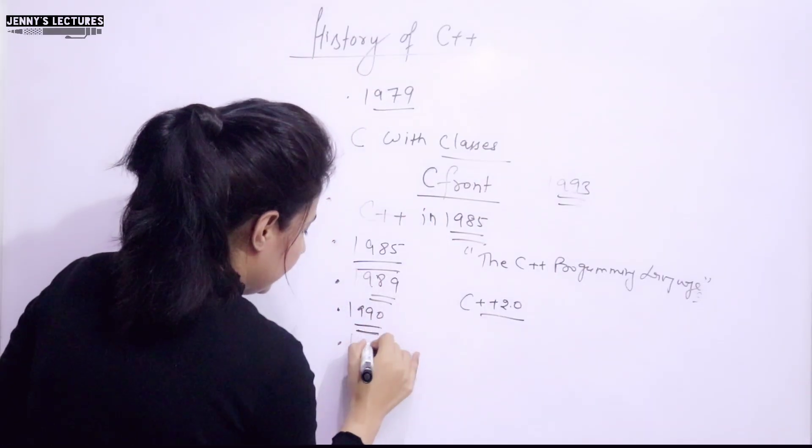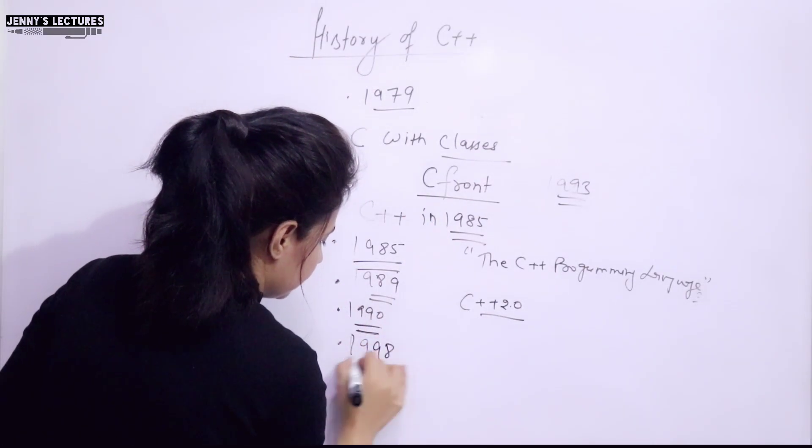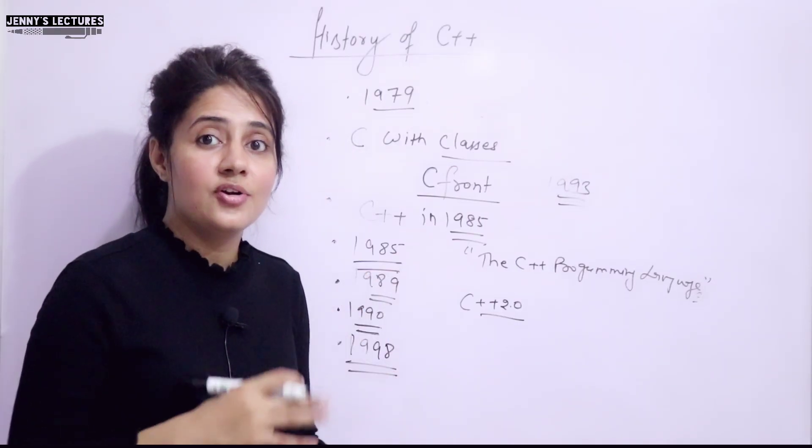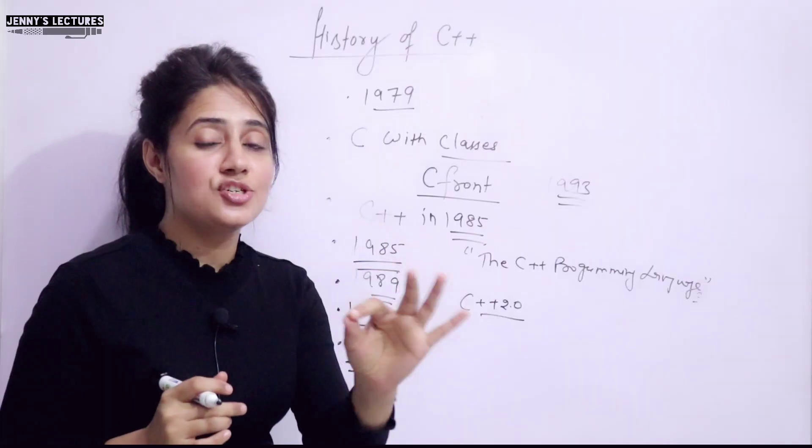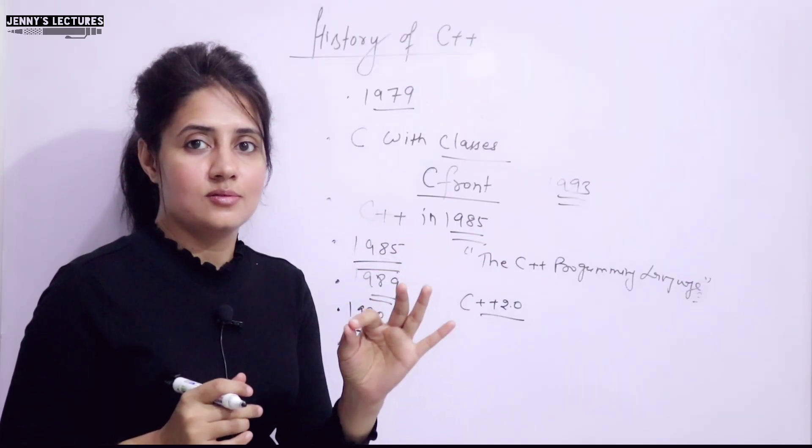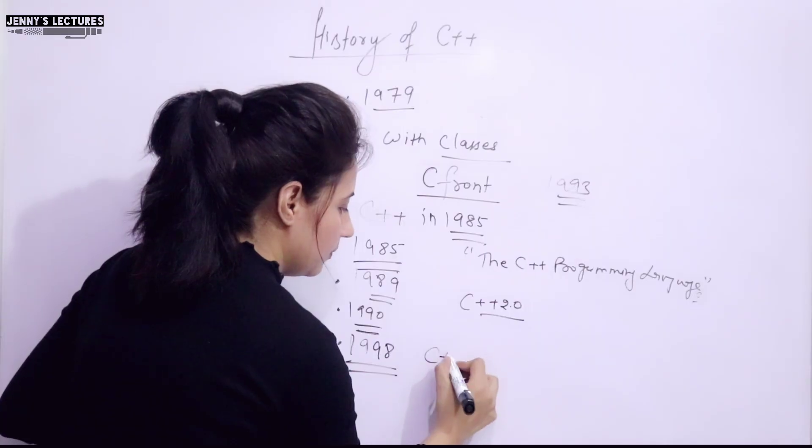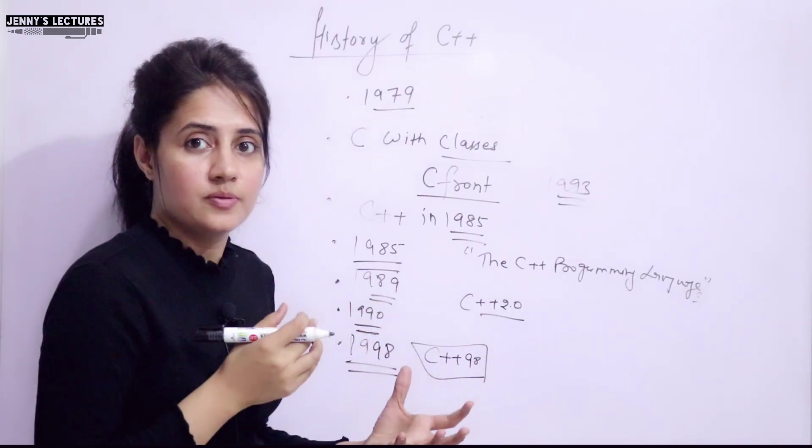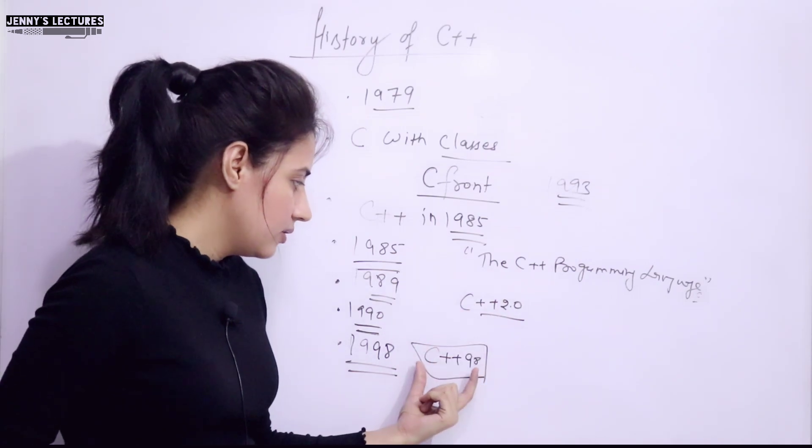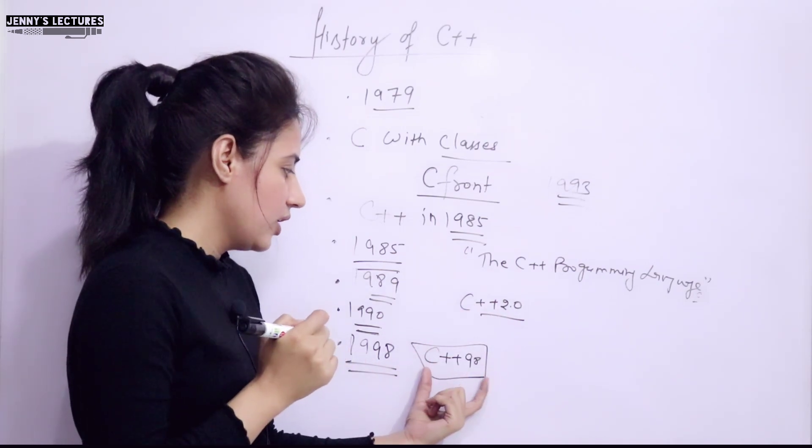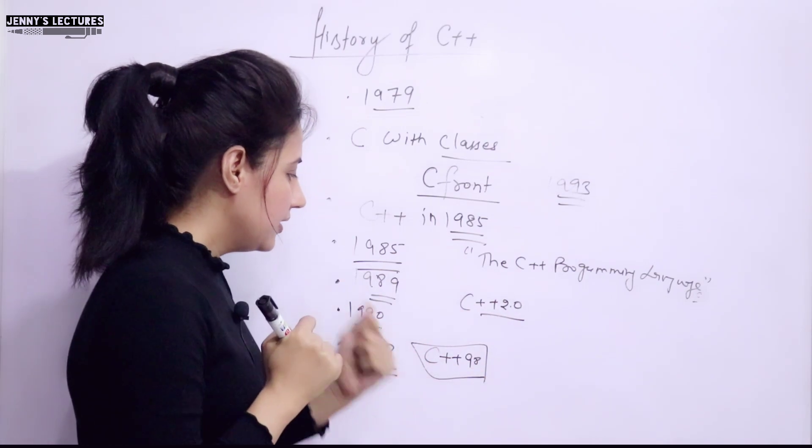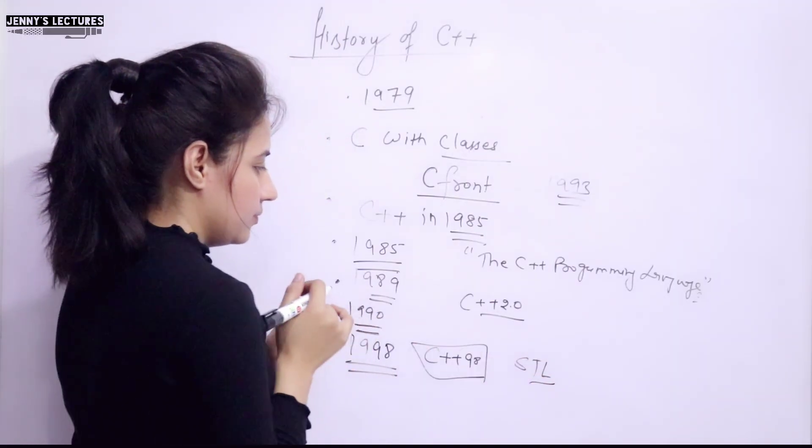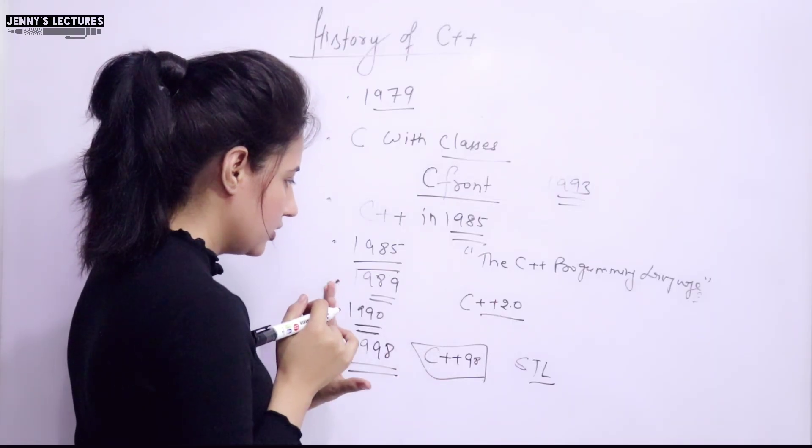Now, again, in 1998, the standard committee released the first international standard of C++. That was C++ 98 means it was standardized by ISO in 1998. The version was known as C++ 98. And standard template library was also included. STL. In this version.